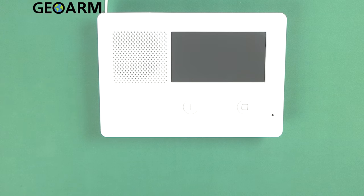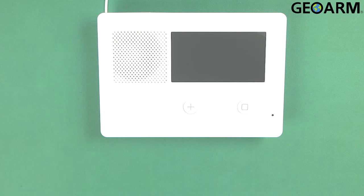Hey guys, Drew with GeoArm and I am back to talk to you about the 2GIG GC2e and getting the cellular communicator, the 2GIG LTE-AA or the LTE-V, whichever one it is that you're working with, Verizon or AT&T. This is the same installation video for them no matter what.